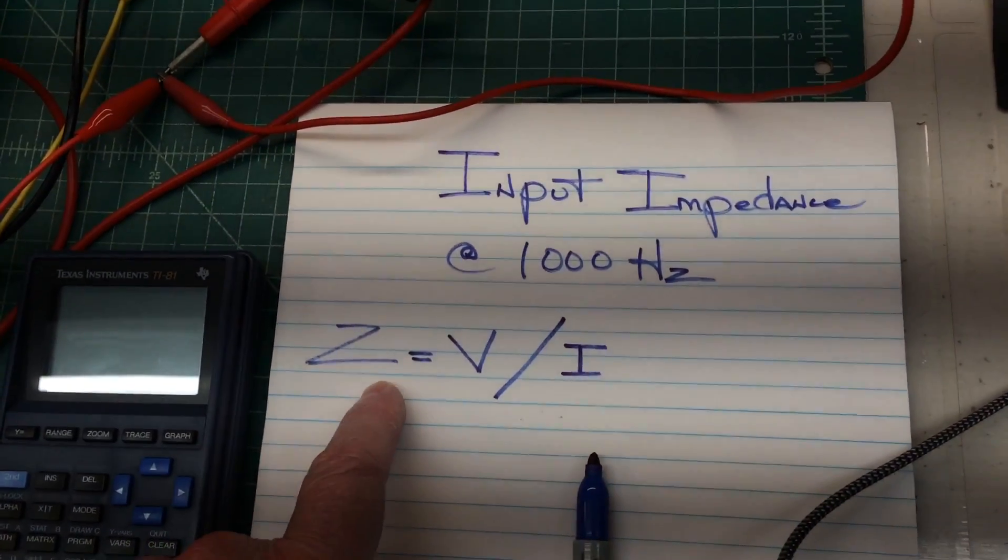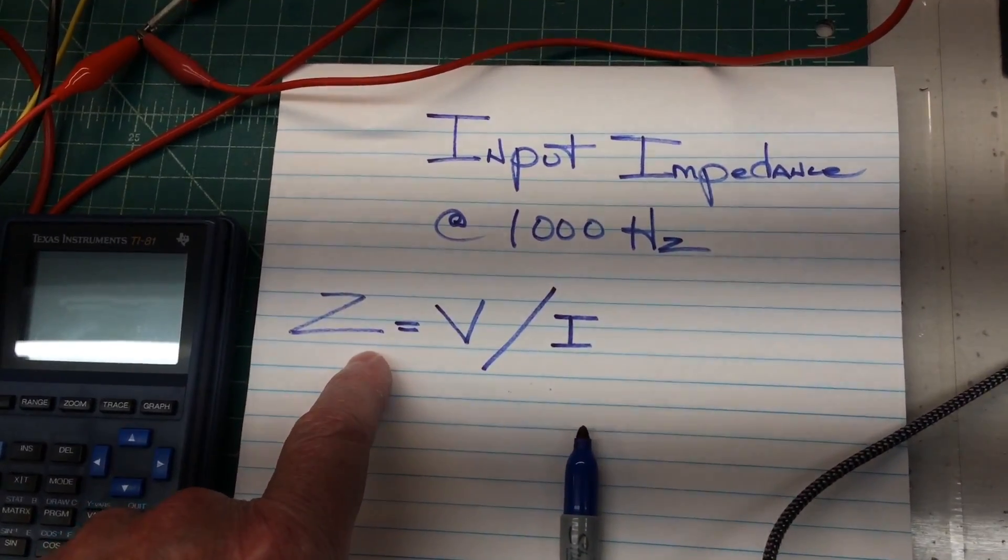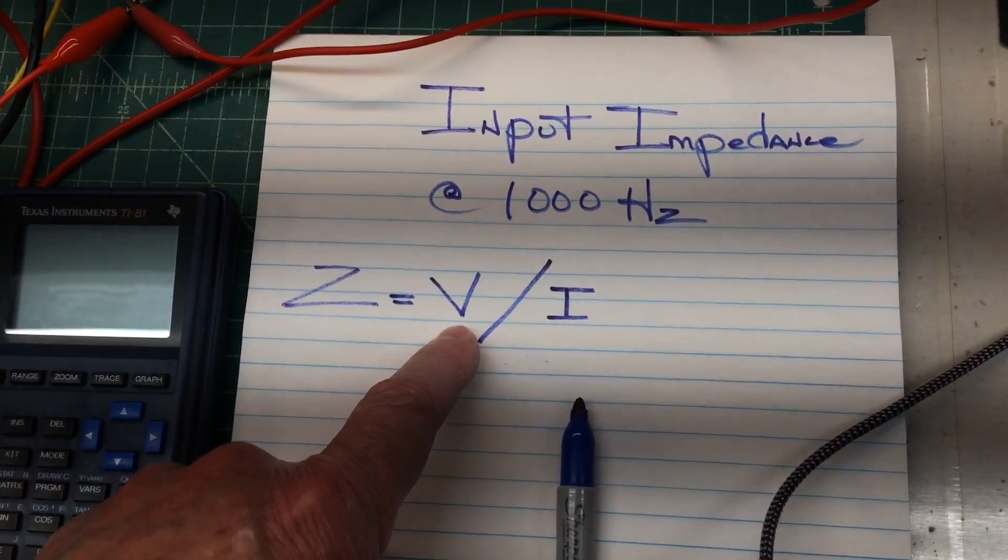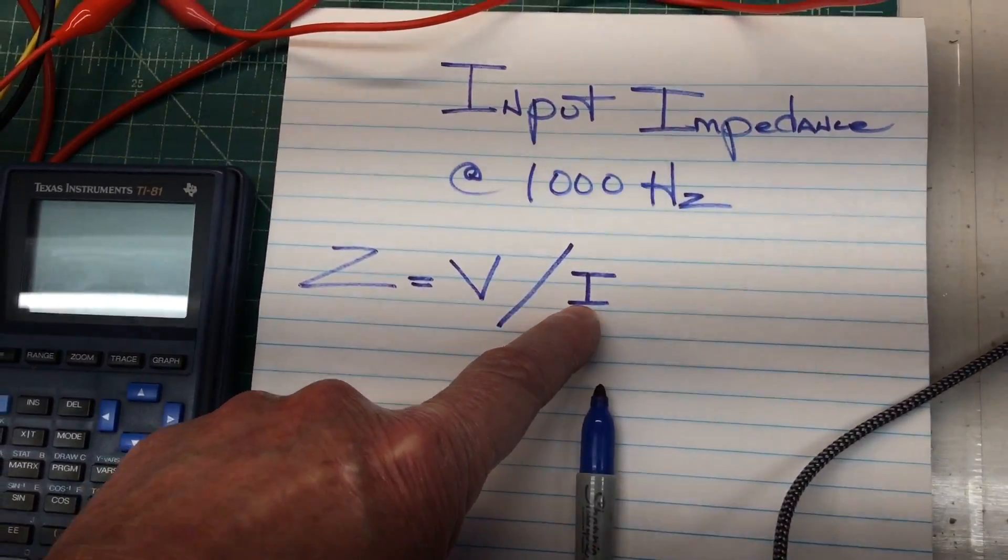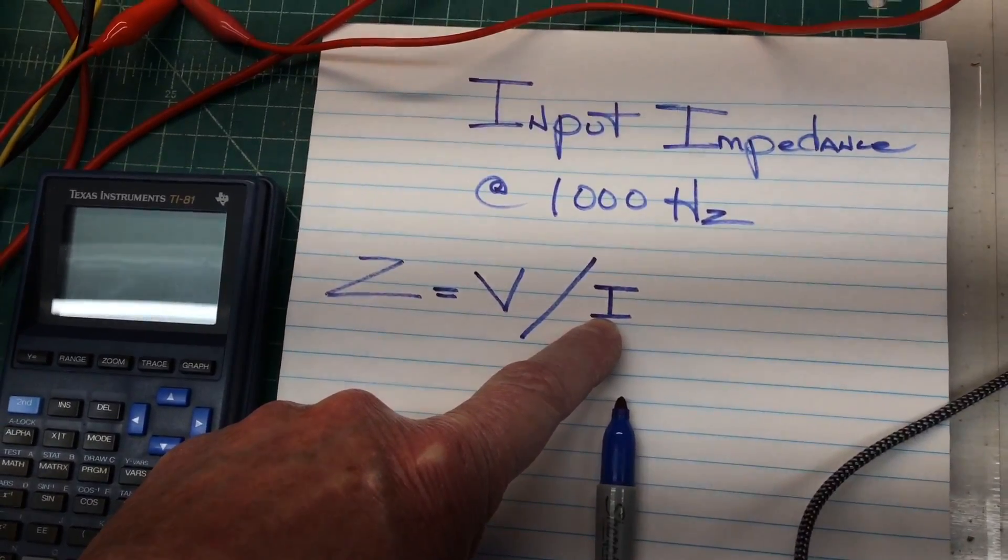Again, just some basic math here. So the impedance is going to be our voltage divided by current. And again, this will be AC voltage and AC current. So let's get started.